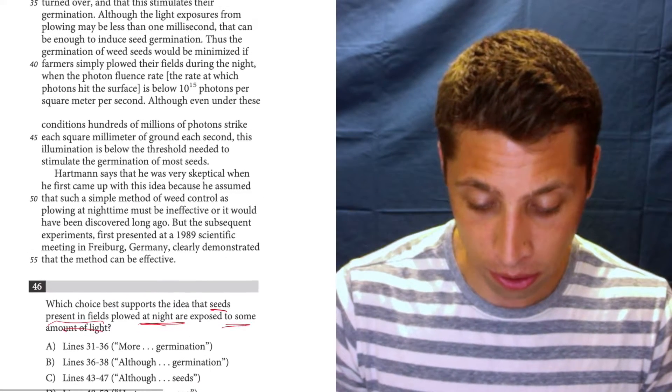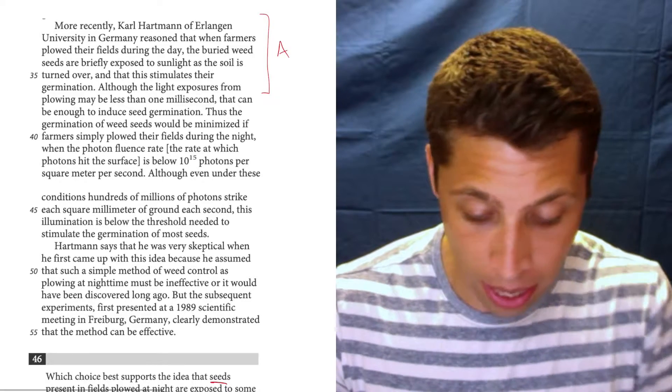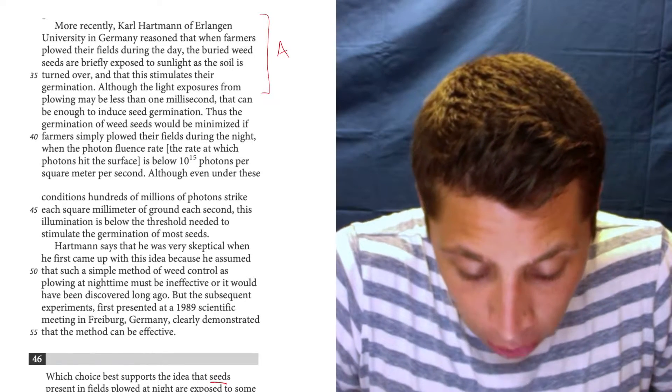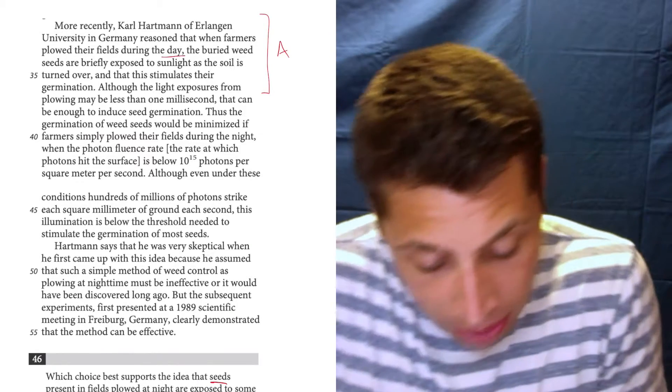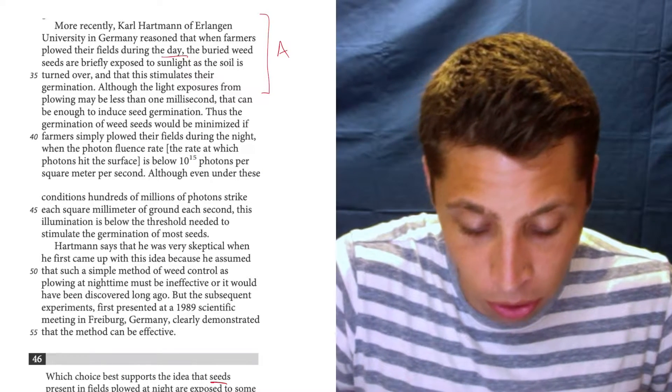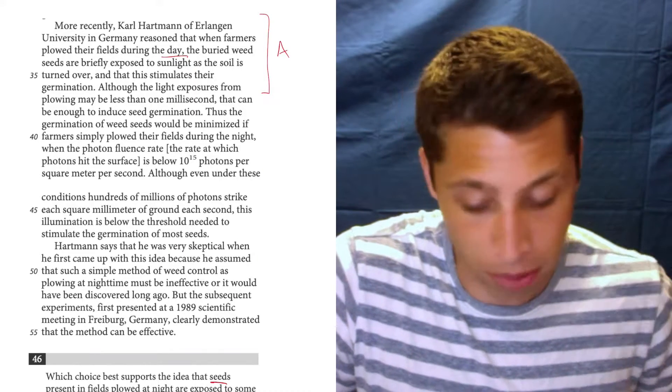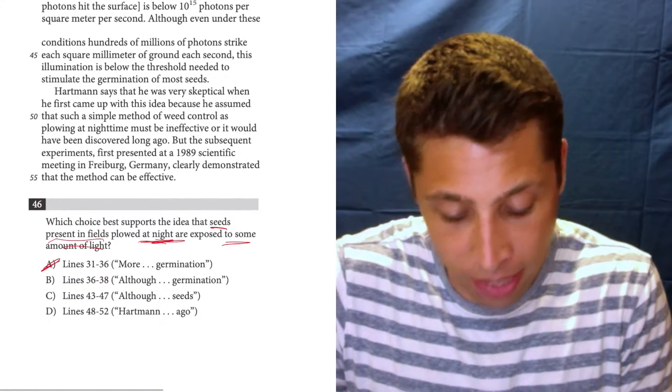So let's go to 31 to 36. That's a lot, but it's right here. That's line reference A. More recently, Carl Hartman of Erlingen University in Germany reasoned that when farmers plowed their fields during the day, the buried weed seeds are briefly exposed to sunlight as the soil is turned over and that this stimulates their germination. So it's about the daytime. That's wrong. We need it to be about the nighttime.